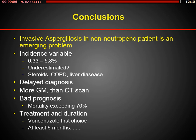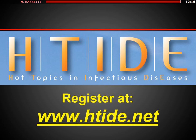In conclusion, invasive aspergillosis in non-neutropenic patients is an emerging problem with variable incidence of 0.33% to 5.8%, and probably underestimated. Do not forget three important risk factors: steroid use, COPD, and liver disease. There are many delayed diagnoses. Galactomannan in BAL is probably more important than CT scan — the opposite of hematological patients. Prognosis is bad, with mortality exceeding 70%. Voriconazole is the first-choice treatment, and duration should be at least six months.